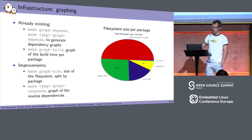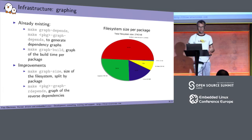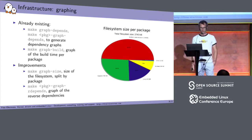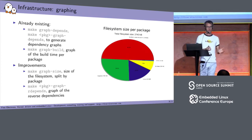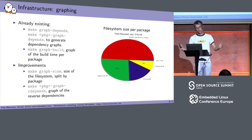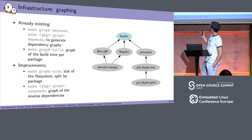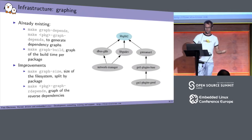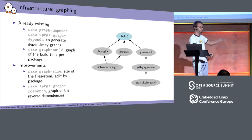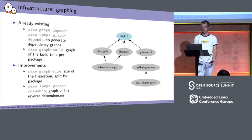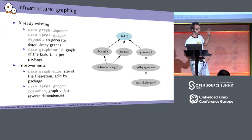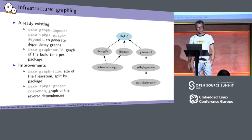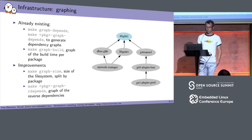We already had graphing capabilities to analyze the system produced with Buildroot — mainly dependency graphs and build time graphs. We added filesystem size graphs, so you can see per package what is the contribution of each package to the whole filesystem size. If you want to reduce the size of your filesystem, you can see, for example, that Qt is the one at fault. We also added reverse dependency graphs — like who is depending on libglib2 — so if you want to get rid of libglib2, you can figure out what other packages require it. This can be really helpful to analyze what's in your system, especially for complicated ones.